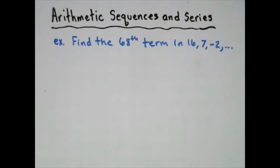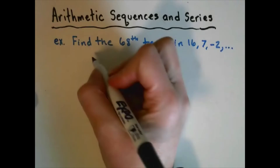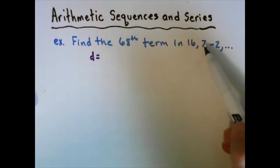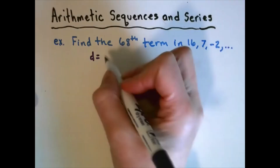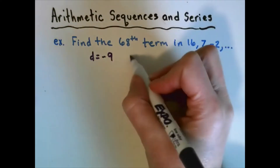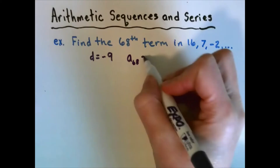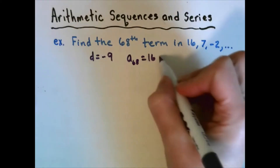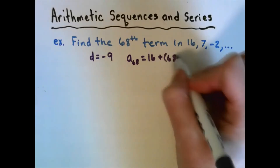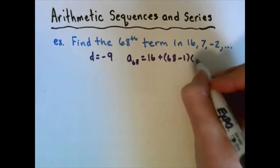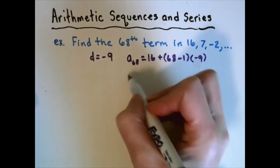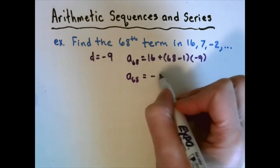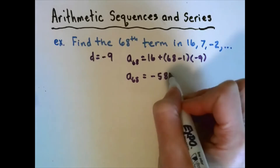Example: find the 68th term of 16, 7, negative 2. Find the common difference — that's negative 9. Then a_68 equals a1 plus (68 − 1) times negative 9, so 16 + 67 · (−9). Type that in your calculator and the answer is negative 587.